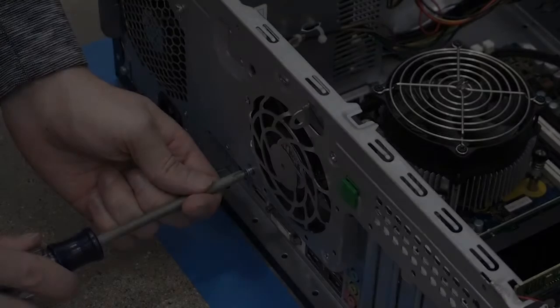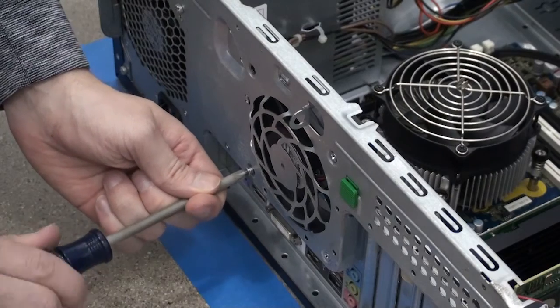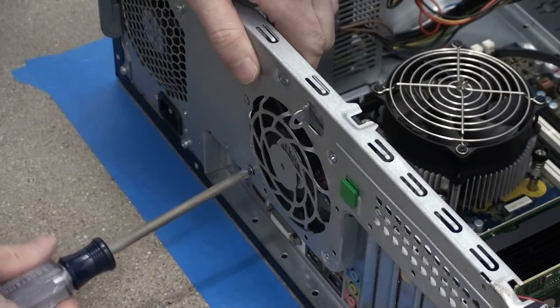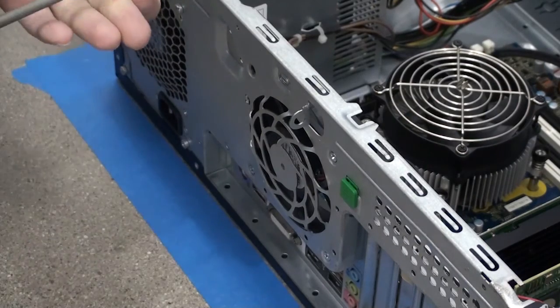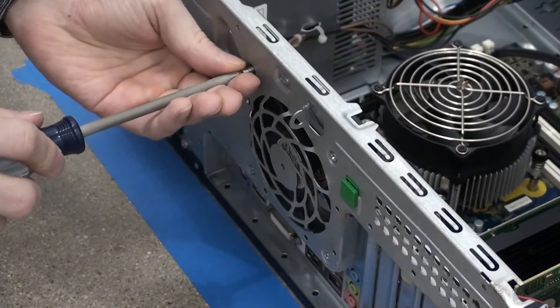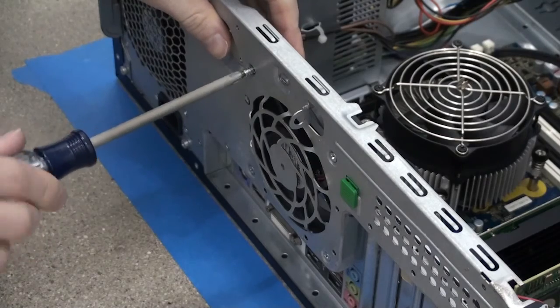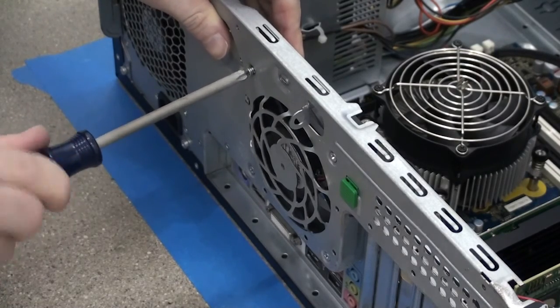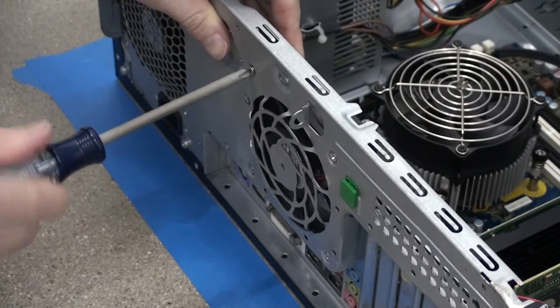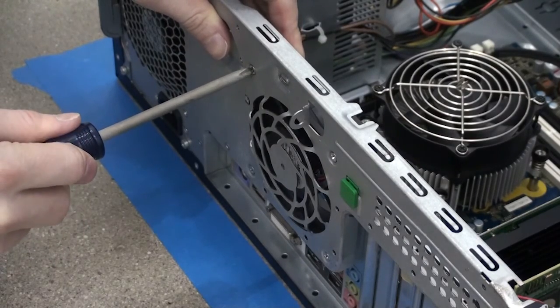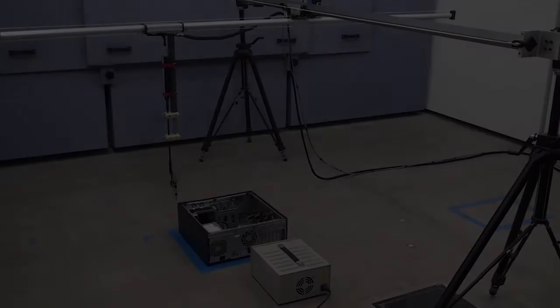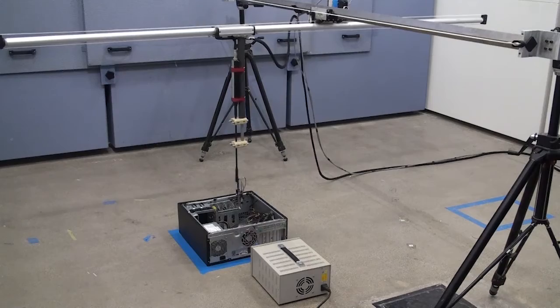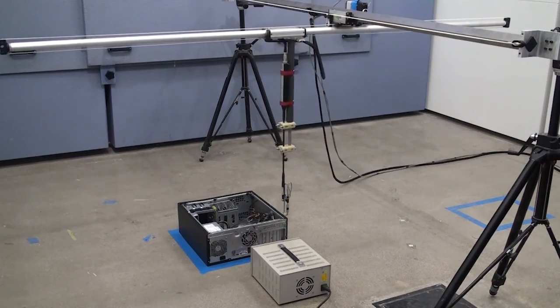We will now demonstrate the effect of transmissibility on a computer system with a fan mounted to it. A common problem is the acoustic energy in the system is amplified when the fan is hard mounted to the chassis. You will first see an NMB fan hard mounted to a computer chassis and an acoustic scan performed. Following that, you will see the same fan mounted with Isodamp C8002 fan mounts and another scan performed.